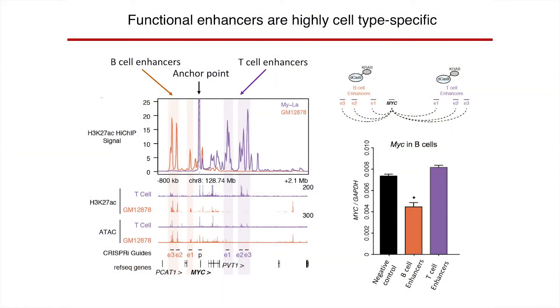We compared our results to a high-resolution CRISPR screen done by Jesse Engritz and Eric Lander at the Broad Institute. They tiled 100,000 CRISPR guides across this exact same locus and asked which guides affect MYC expression. They find essentially the same five regions controlling MYC as we do using Hi-ChIP. So with this assay, we are actually identifying functional enhancer-promoter connections rather than just 3D connections that don't matter.